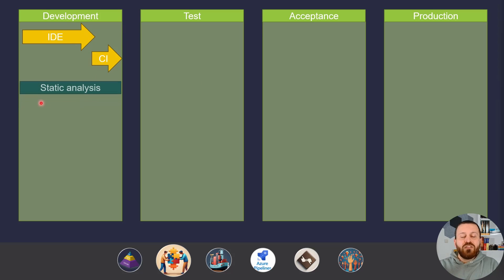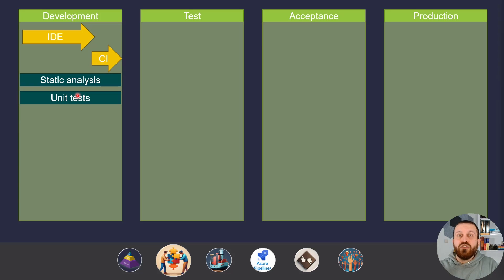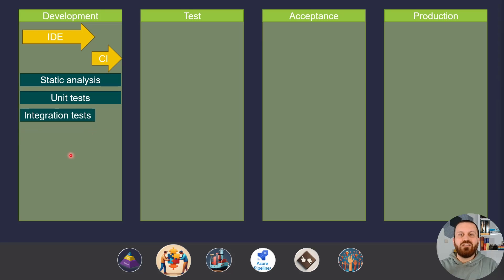We have IDE and CI pipeline inside the development stage. You also have static analysis tools — the warnings that Visual Studio itself gives you, or warnings you see when running the CI pipeline, or other static analysis tools for security or code quality inside your pipeline. You can and should run unit tests both on your IDE and your CI pipeline. And then you have integration tests on your IDE.